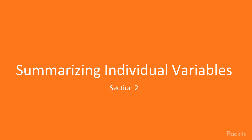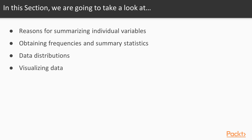In this section, we're going to talk about how to summarize individual variables. We're going to start off by talking about some of the reasons why you would want to summarize individual variables. After that, we're going to talk about how you obtain frequencies and how you get different summary statistics. From there, we'll talk about different data distributions and how these affect the kind of analyses that you can do. And finally, we're going to create some graphs so that you get an idea of how to visualize your data.